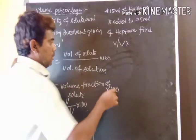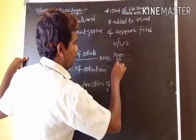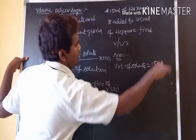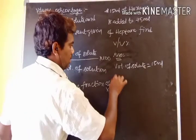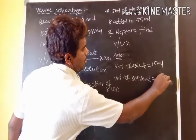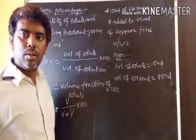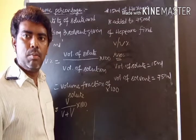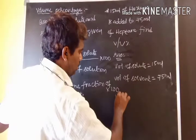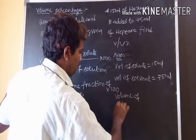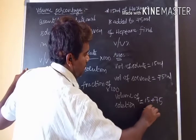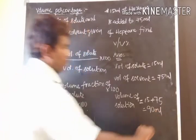According to the given values: volume of solute (hexane) = 15 ml, and volume of solvent (heptane) = 75 ml. Heptane is taken as the solvent because it is the larger quantity (75 ml), while hexane at 15 ml is the smaller quantity and is therefore the solute. Volume of solution = 15 + 75 = 90 ml.